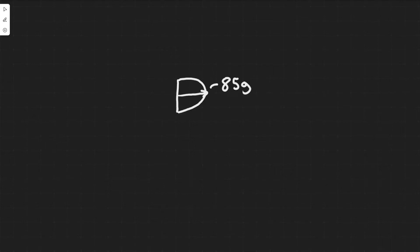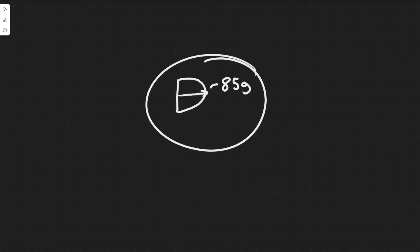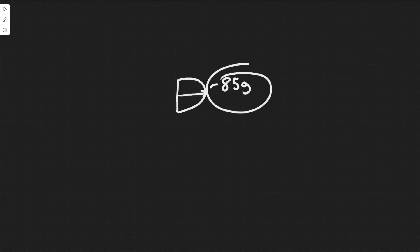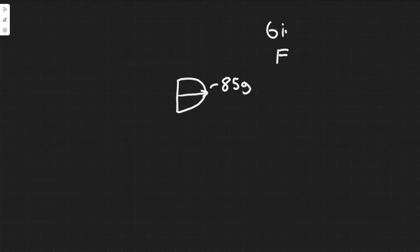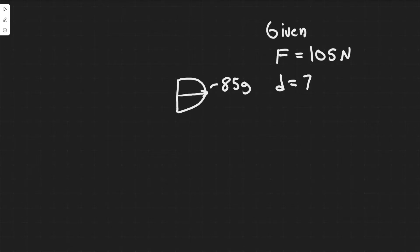In this problem we're told an 85 gram arrow is fired from a bow whose string exerts an average force of 105 newtons on the arrow over a distance of 75 centimeters. What is the speed of the arrow as it leaves the bow? So we have this bow, the arrow is 85 grams, and there's a force of 105 newtons exerted on it. Let's write down our givens: F = 105 newtons over a distance of 75 centimeters.